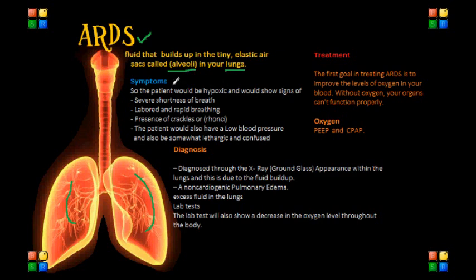The signs and symptoms of ARDS can vary in intensity and basically depend on the cause and severity. The patient would be hypoxic and would show signs of shortness of breath (SOB). There would also be labored and rapid breathing and presence of crackles or rhonchi when we assess the patient. The patient would also have low blood pressure and can be somewhat lethargic and confused.